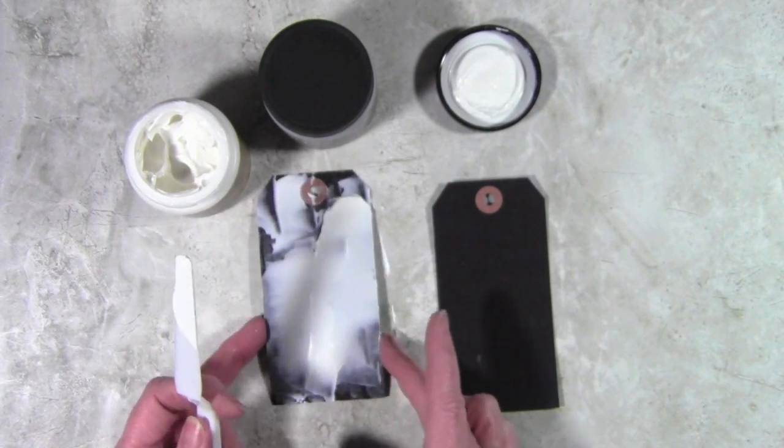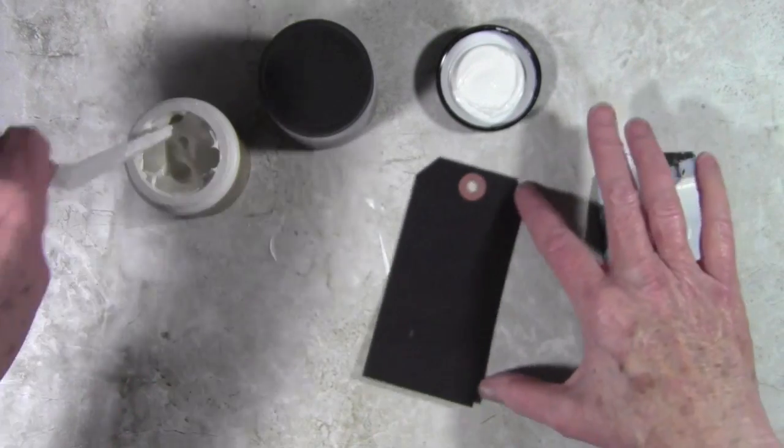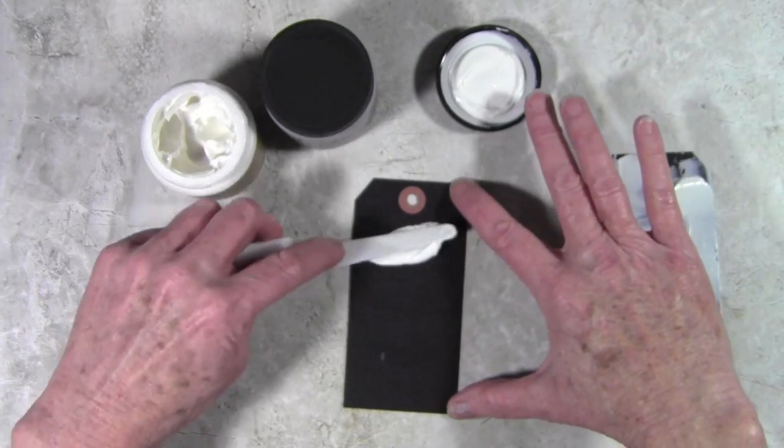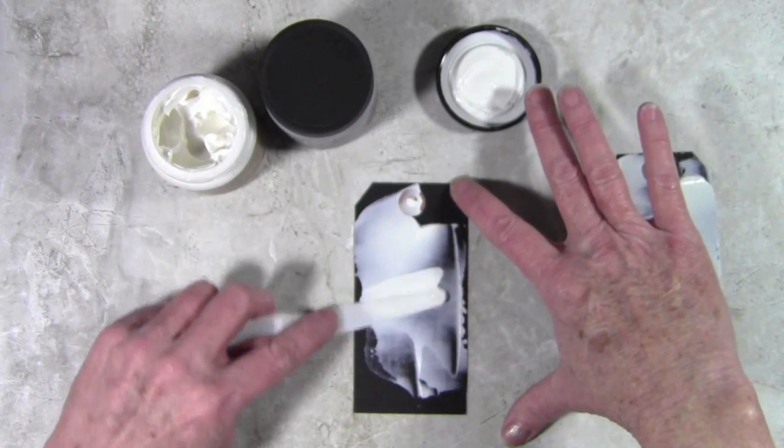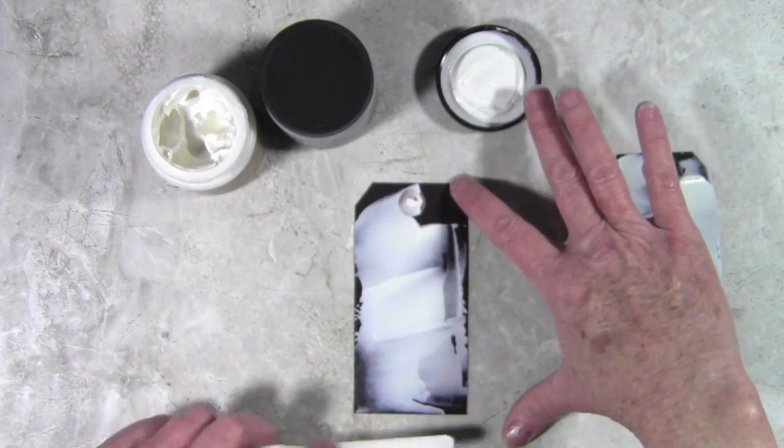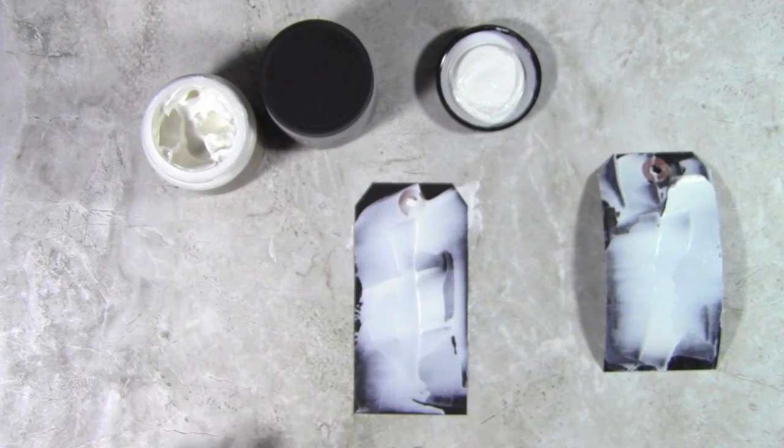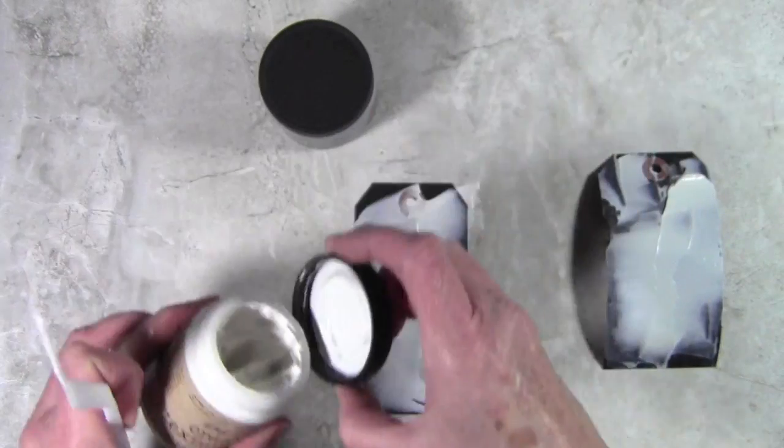I'll go ahead and set this aside and next I'll spread the crackle texture paste directly onto the black tag without any other paste. Again, I'll try to have some light areas and heavy areas and I'll try to get it pretty much the same as the other tag so that I have a really good comparison.